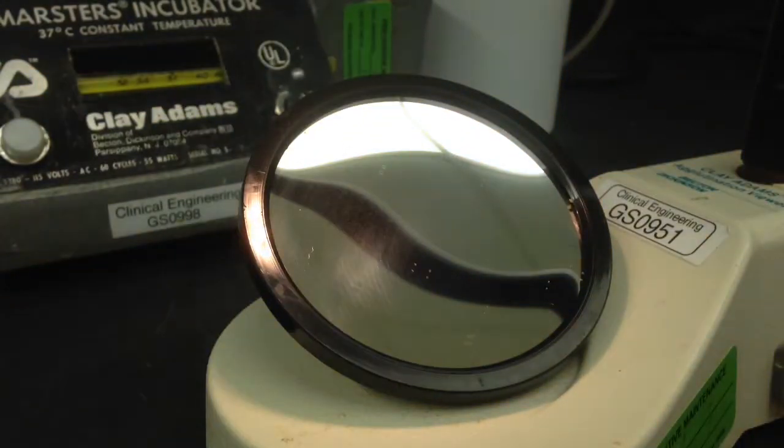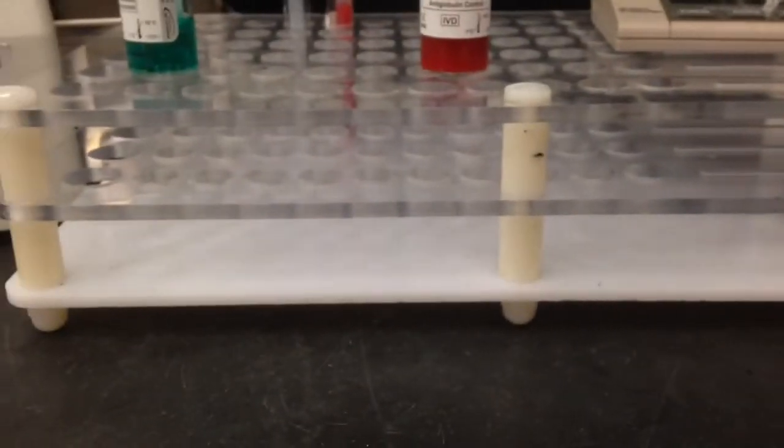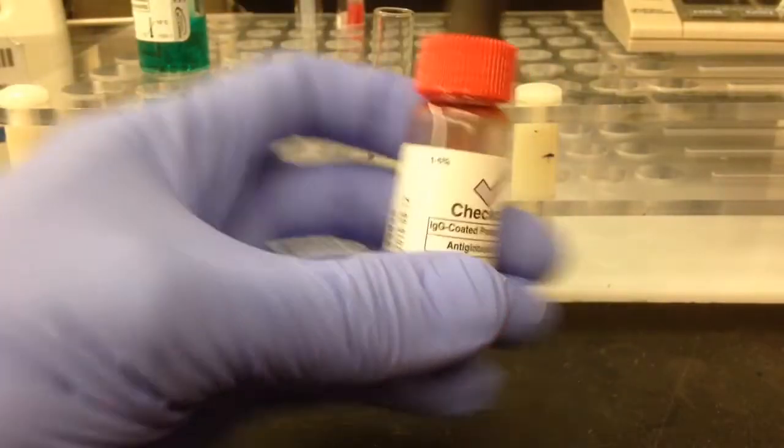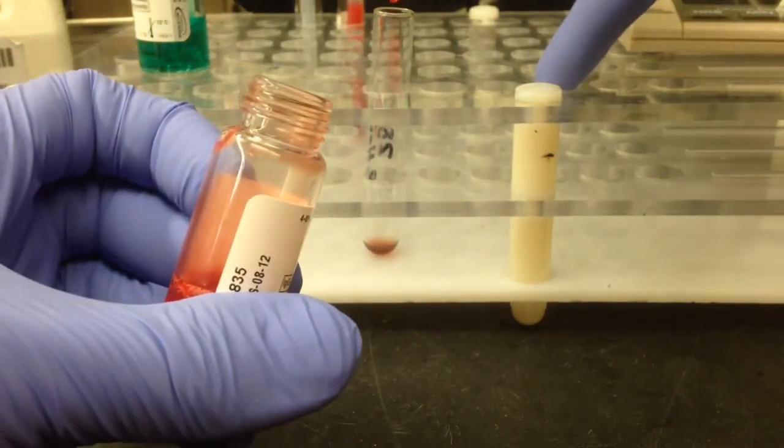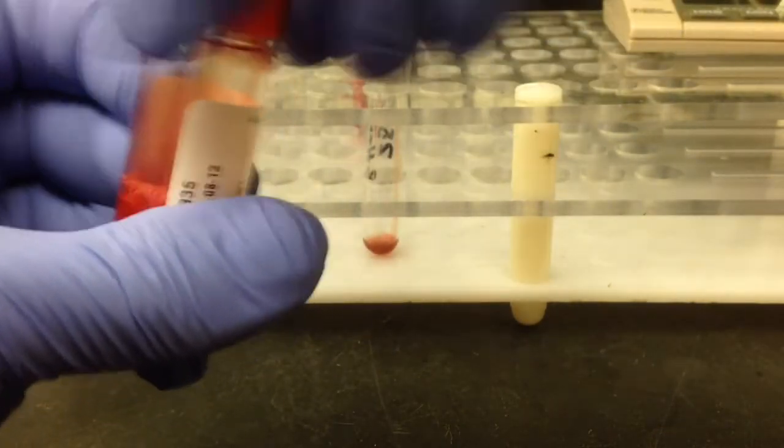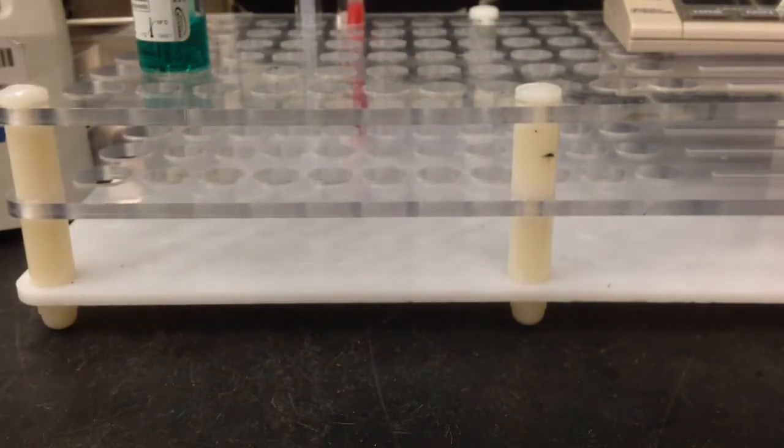So I'm just re-suspending the button. After you're done re-suspending the cell button, if it is negative, the next step is to add the check cells to your specimen. You do this just to make sure there weren't any mistakes in any of the preceding steps.